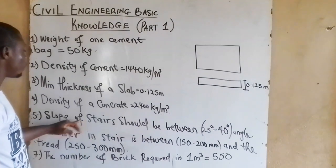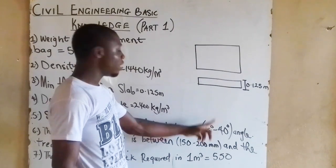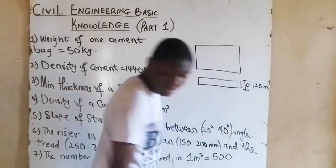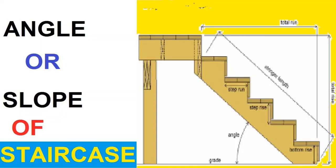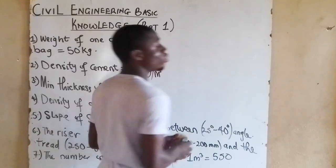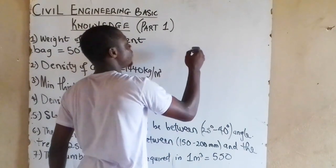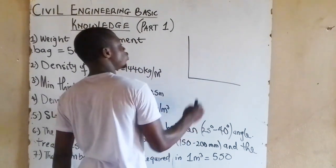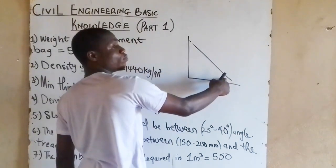Slope of stairs should be between 25 degree or 40 degree in angle, in terms of angle. Let me explain that. I believe you want to know what's a slope. The slope is that line that goes through this space. This is a slope.